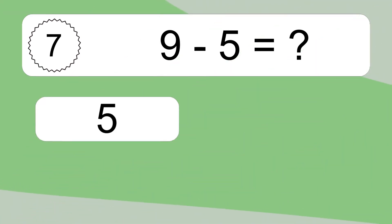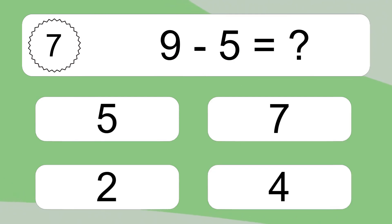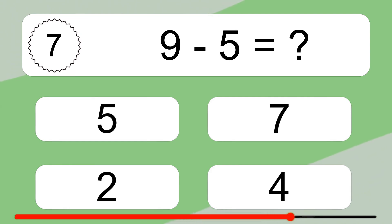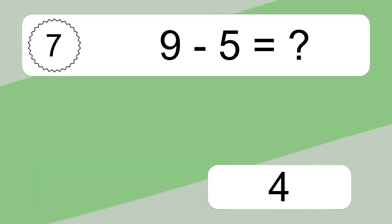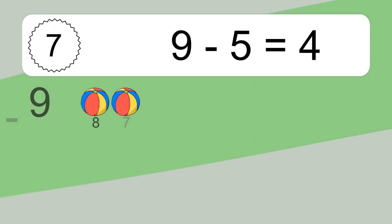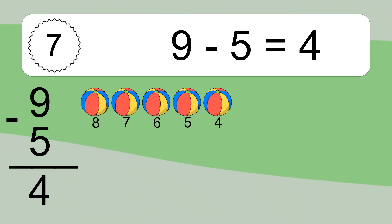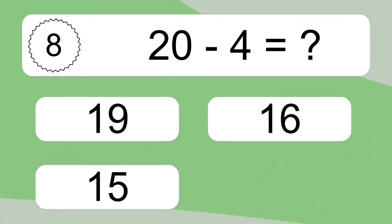9 minus 5 equals what? 9 minus 5 equals 4. Let's count it: 8, 7, 6, 5, 4. 10 minus 4 equals what?